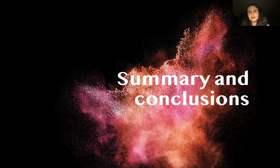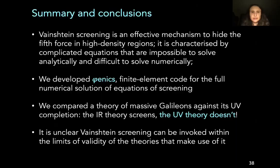So to summarize and conclude, Vainshtein screening is an effective mechanism to hide the fifth force in high density regions and it's characterized by quite complicated equations that have made it difficult to understand what's going on in the screening mechanism. We developed a finite element code for the full numerical solution of the equations of screening and we've applied it to a problem where we've compared a theory of massive Galileons against a potential UV completion to see if the screening was surviving the extension and we found that it doesn't. So this means that it's unclear that Vainshtein screening can be invoked within the limits of validity of the theories that make use of it. And with this I conclude. Thank you for your attention.